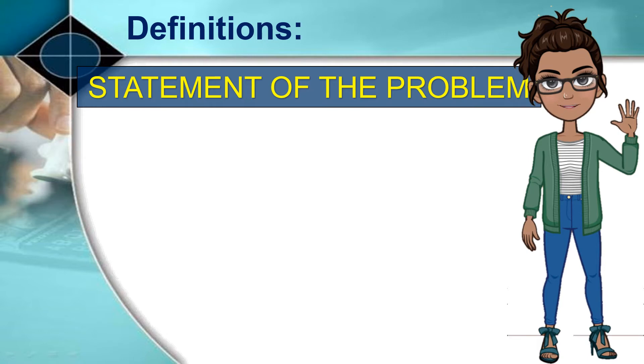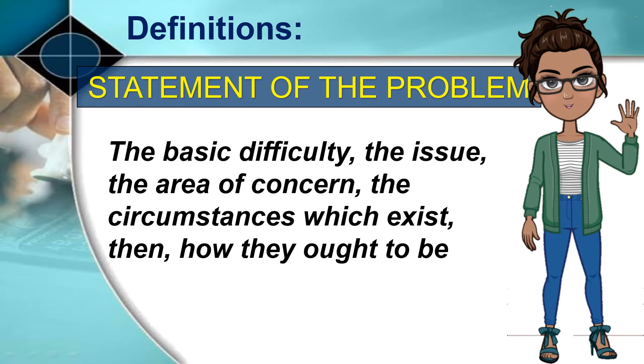The statement of the problem: this is the basic difficulty, the issue, the area of concern, the circumstances which exist then how they ought to be. The researcher should give the background which led to these circumstances that exist. Briefly describe the condition or situation that exists which is perceived as something less than the ideal, or what it should be, and how you see it to be.